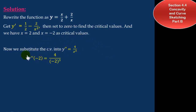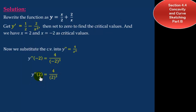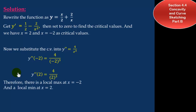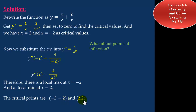Substituting the critical values into the second derivative using the second derivative test: y double prime at negative 2 is negative, so at x equals negative 2 it's concave down. At x equals 2 it's concave up, which means a local maximum occurs at x equals negative 2 and a local minimum at x equals 2. Plugging these x values into the original function gives the corresponding y values.